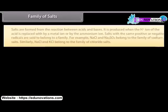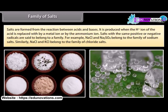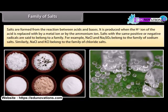Family of salts: Salts are formed from the reaction between acids and bases. A salt is produced when the H⁺ ion of the acid is replaced by a metal ion, or by the aluminum ion, or by the ammonium ion. Salts with the same positive or negative radicals are said to belong to a family. For example, NaCl and Na₂SO₄ belong to the family of sodium salts. Similarly, NaCl and KCl belong to the family of chloride salts.